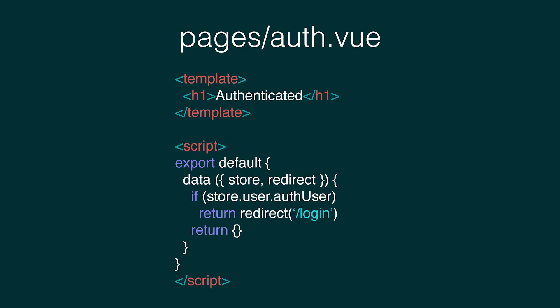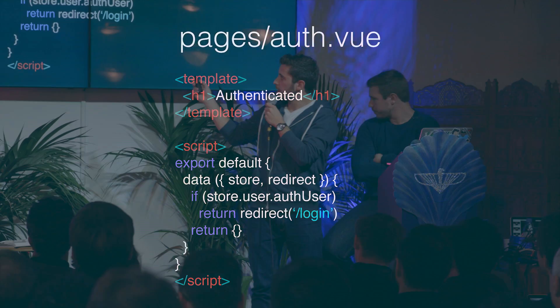So let's say you have an auth route which is only displayed when the user is connected. You can check if they're connected — here I'm using the store, which I'll talk about later — and redirect them to the right page. This also works from the server side, so if they go directly to this page from the server, it will be an HTTP redirect to the slash-login page. This code is shared between client and server.